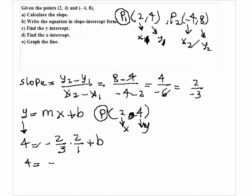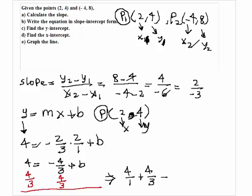This would be -4/3 plus b. To solve for b, you have to add 4/3 to both sides of the equation. Then I would get 4, or 4/1, plus 4/3 is equal to b.